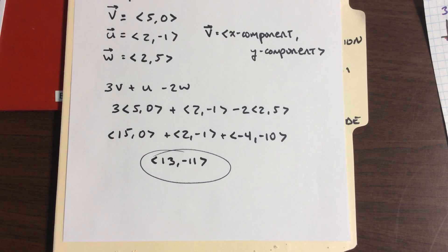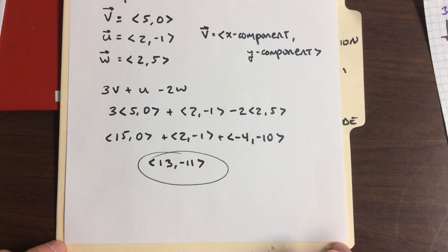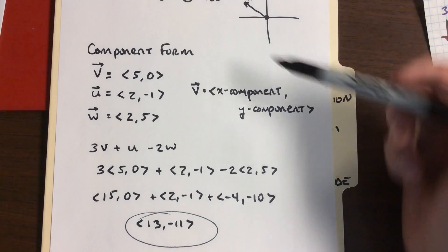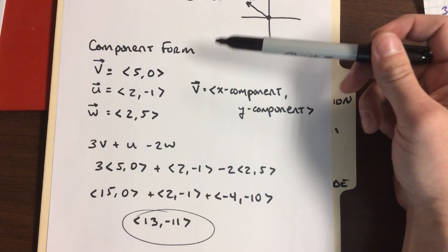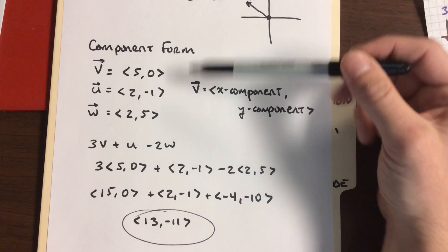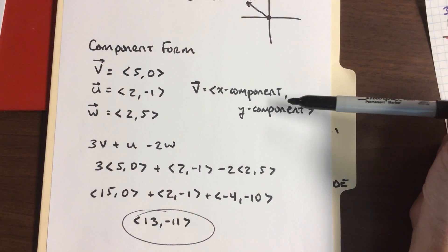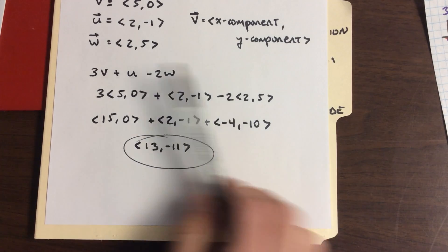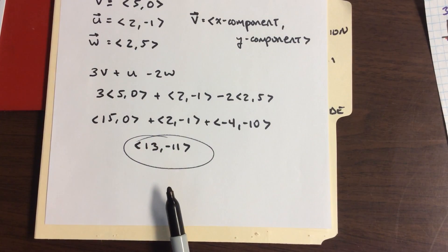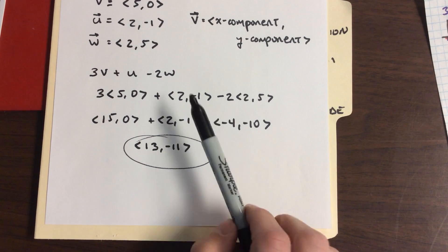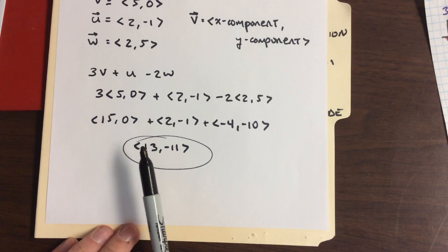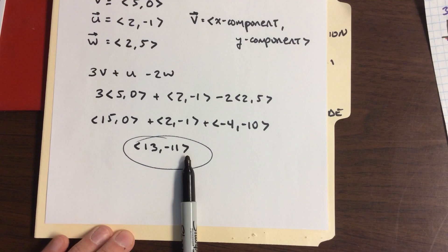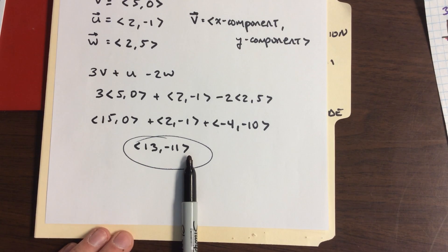I did two things here: identified what we mean by component form of a vector, how we can take a vector and rewrite it as the horizontal and vertical pieces. Also, arithmetic using component form. When we break things down algebraically, it's just combine the horizontal, combine the vertical. Isn't that nice? A little bit easier that way.